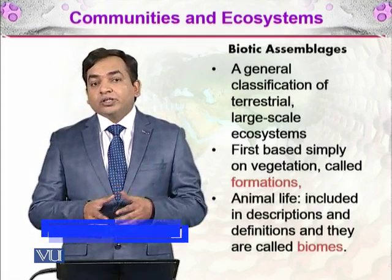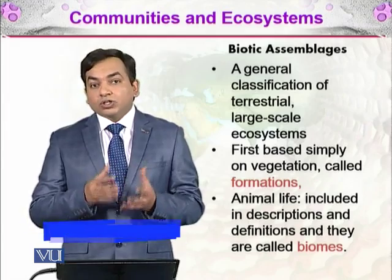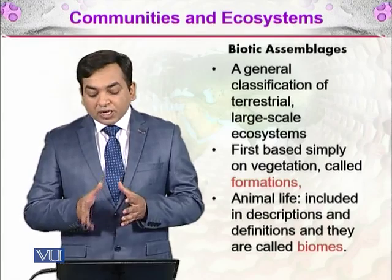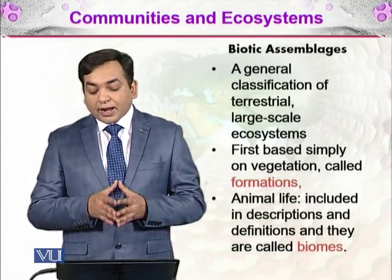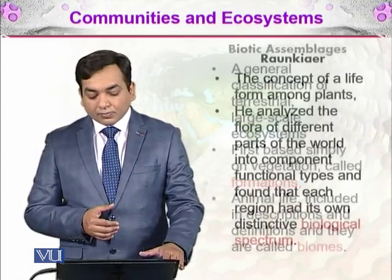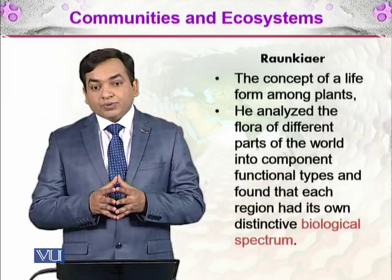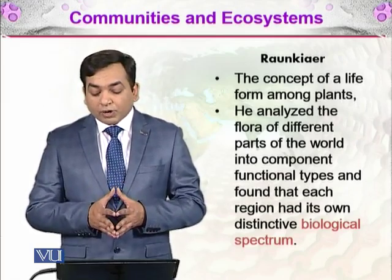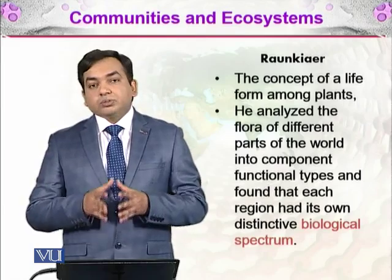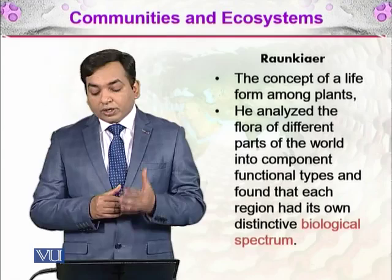As we have discussed earlier in the history of biogeography, the first things that ecologists or biologists used to study were formations — how different plants are distributed on the globe. But later, animal life was included in descriptions and definitions, and they are called in modern biogeography as biomes. Ronckier was a scientist who gave the concept of a life form among plants. He analyzed the flora of different parts of the world into component functional types and found that each region has its own distinctive biological spectrum, dividing the globe into different parts each having different flora.